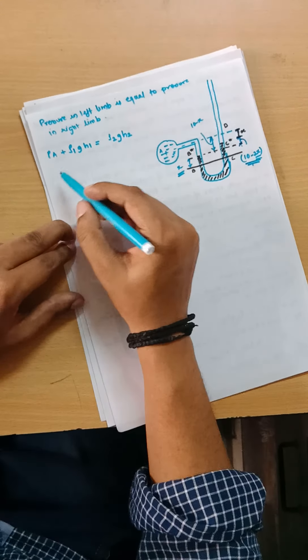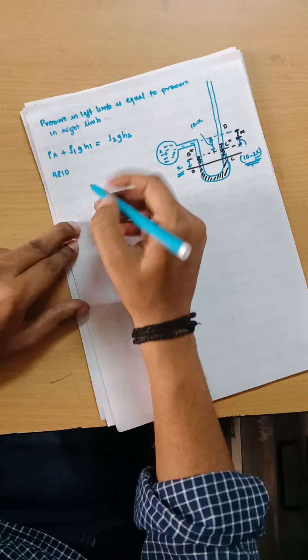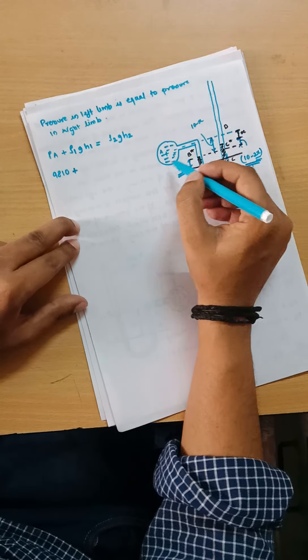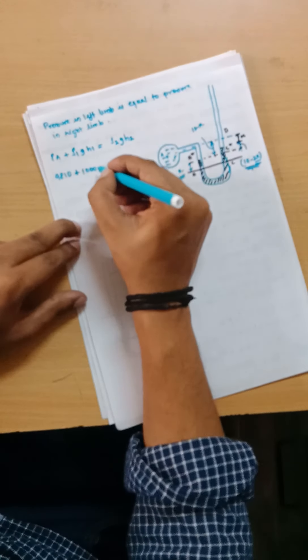There will be pressure at A plus the first fluid ρ₁gH₁, which will be equal to ρ₂gH₂.